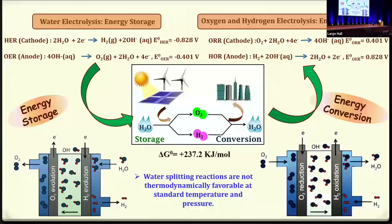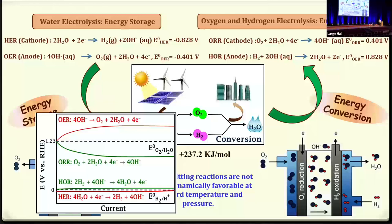These are the fuel cells. Oxygen evolution reaction happens at the anode, whereas hydrogen evolution reaction happens at the cathode. Similarly, the same applies to oxygen reduction reaction and hydrogen oxidation reaction. If you look at the delta G value, it is as high as 237.2 kilojoules per mole for water splitting, so these reactions are not thermodynamically favorable at standard temperature and pressure. Calculations tell you that you require a potential of 1.23 volts to do the water splitting.